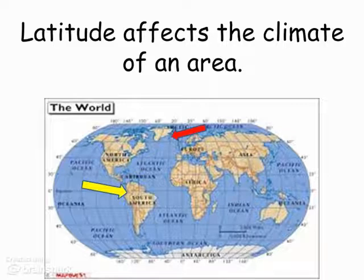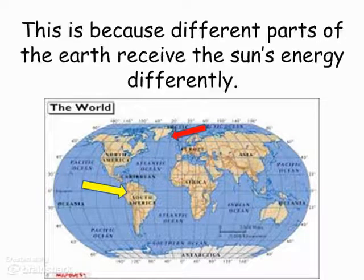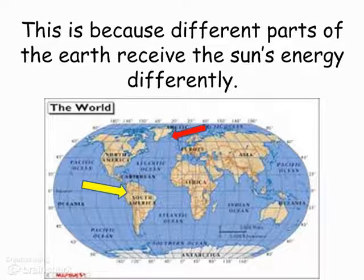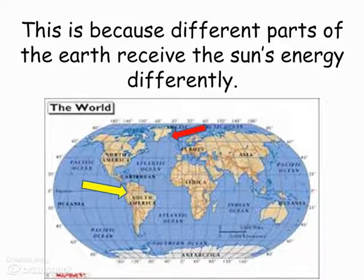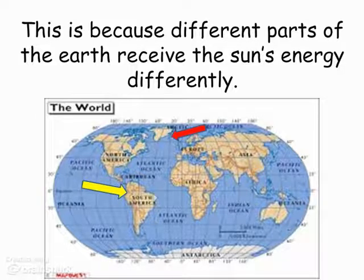So why do different parts of the world have different climates? It all has to do with how they receive the Sun's energy. Our world is a globe — sphere-shaped — so when sunlight hits it, it disperses differently. Right at the equator, sunlight is more direct and concentrated, but as you go farther away from the equator, north or south, that light tends to spread out more.